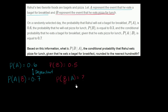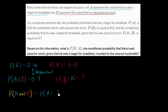So how would we think about this? The best way to tackle this is to think about what's the probability that both A and B are going to happen. The probability of A and B happening is equivalent to the probability of A given B, times the probability of B. The probability that B happens, and given that B has happened, the probability that A happens.